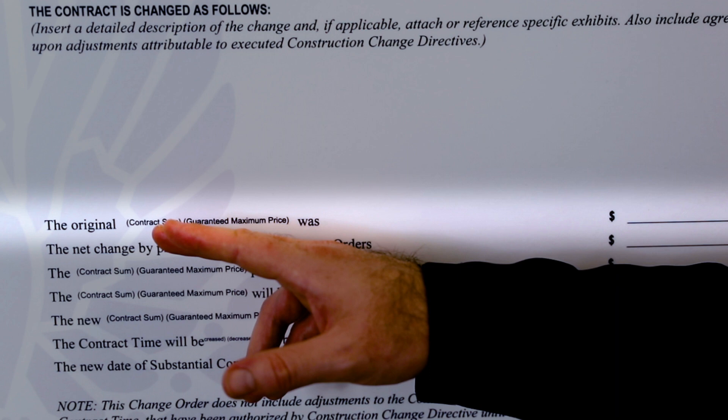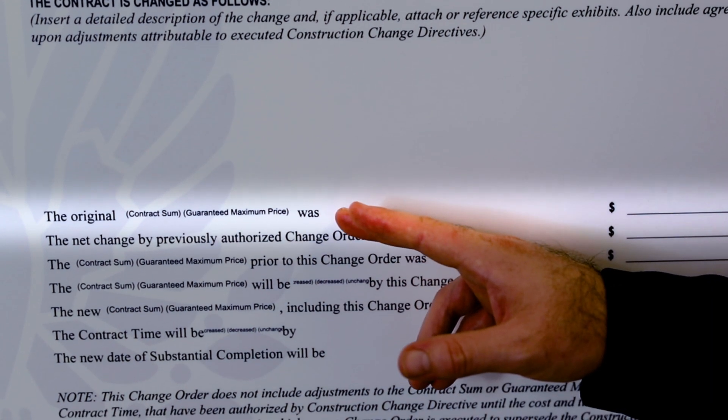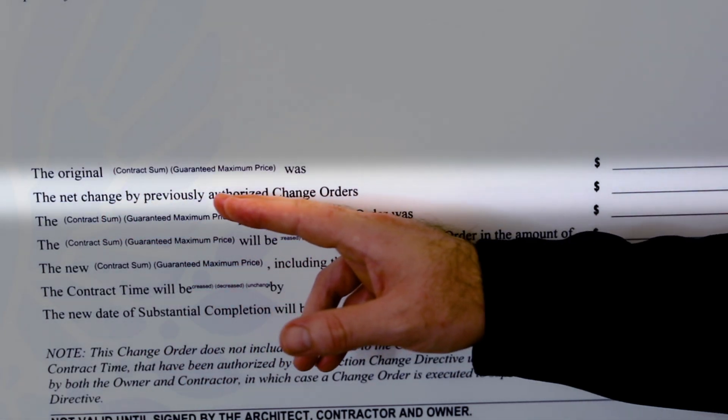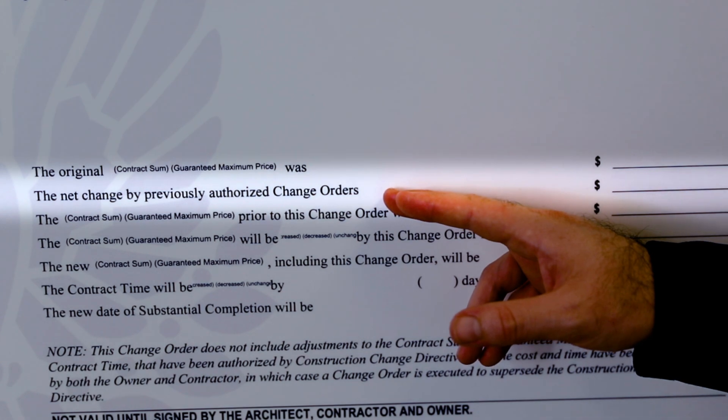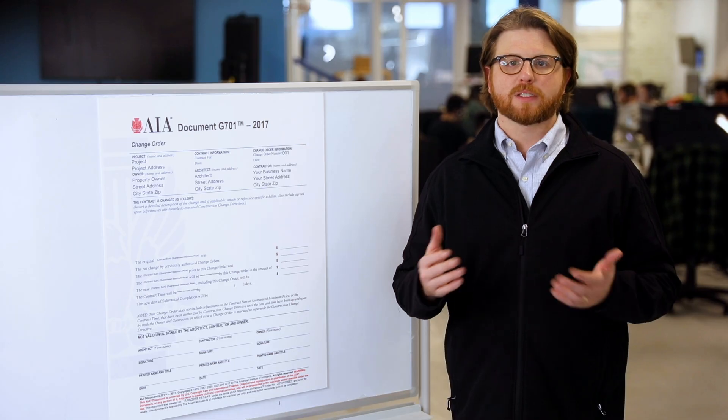Let's start with the first line: the original contract amount. This is the original contract amount for the work from the beginning of the job — this number will remain the same throughout the project no matter how many change orders you write. Next is the net change by previously authorized change orders. If this is the first change order, the value is zero. If it's the second or later, this field will have the total value of all previous changes — which can be either positive or negative, as some change orders are deductive.